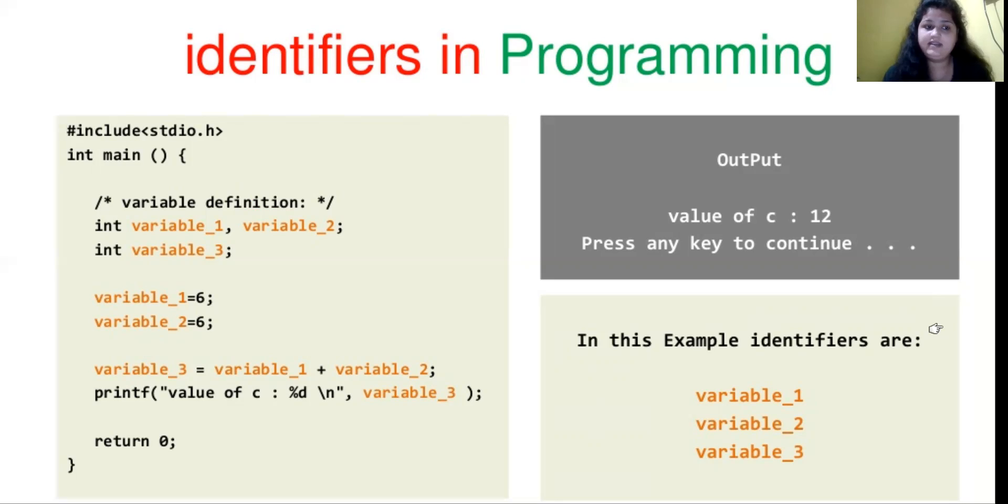Here is an addition program. So variable_3 equals variable_1 plus variable_2. Then we have printf with percentage d which will print the integer value and variable_3, then return 0. So what output will be? The C value is 6 plus 6 which is 12.